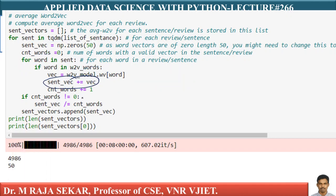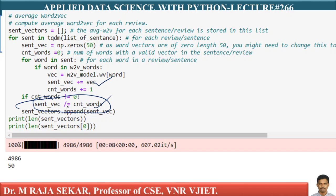Initially I initialize sentence_vec to zero using np.zeros. I keep adding word2vec into the sentence vector, and finally I divide by the count of words. It is a very straightforward implementation of average word2vec — try to walk through this code, it is simple and you can understand it yourself.